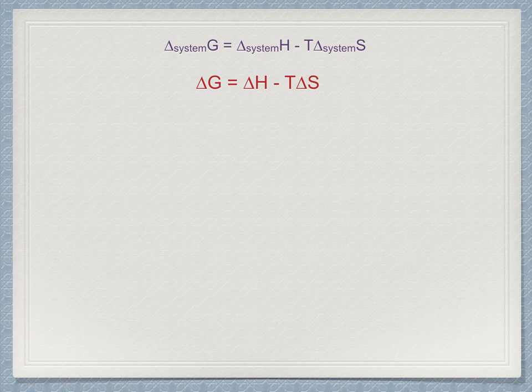Delta G, delta H, delta S can now all refer to the system, and from these we can derive all that we can know about how a process will proceed.